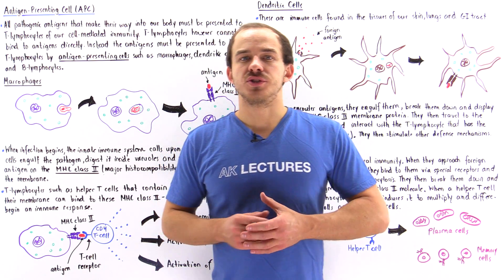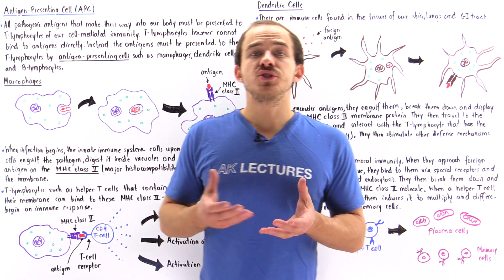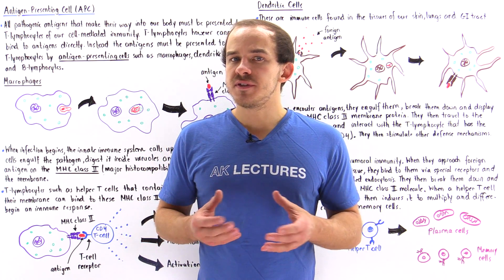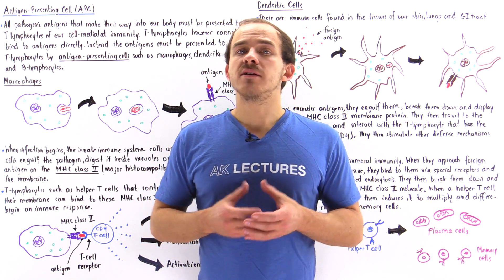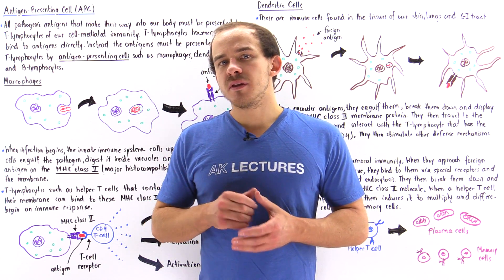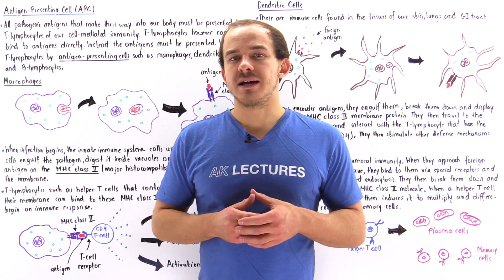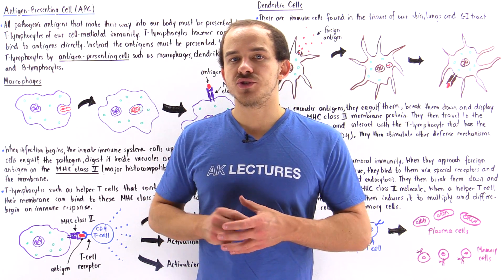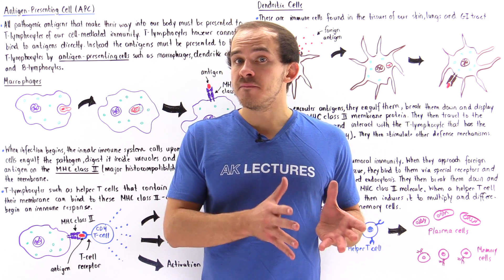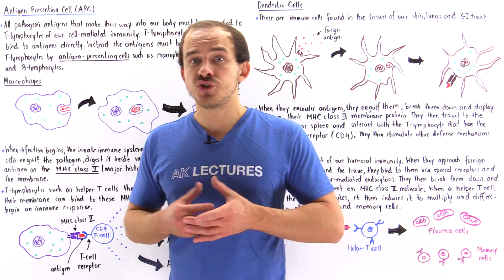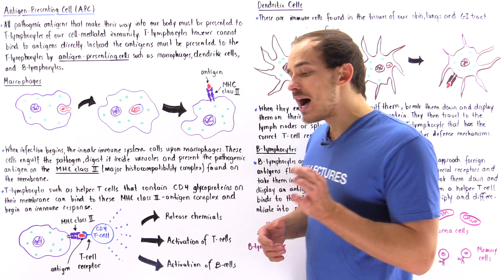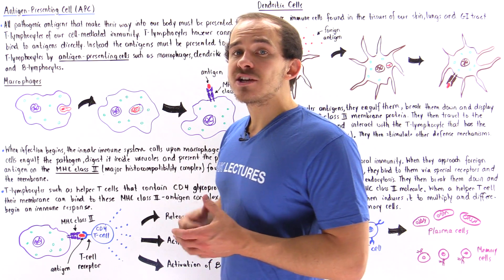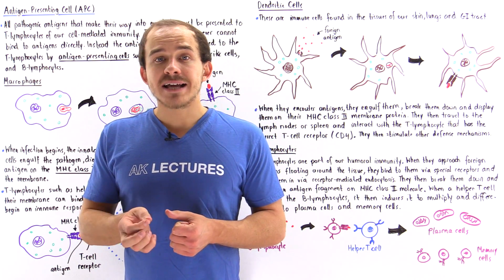All pathogenic antigens that eventually make their way into the tissues of our body must be presented to T lymphocytes, the cells of our cell-mediated immunity. The problem is, these T lymphocytes cannot actually directly bind onto these antigens. What must happen before these T lymphocytes interact with the antigen is a special type of immune cell known as the antigen-presenting cell must actually engulf our antigen.